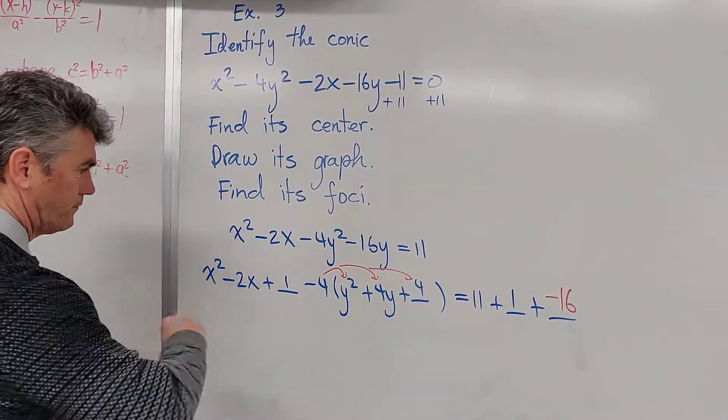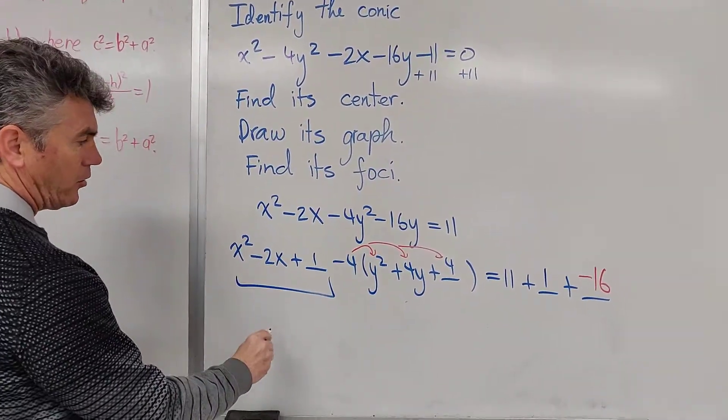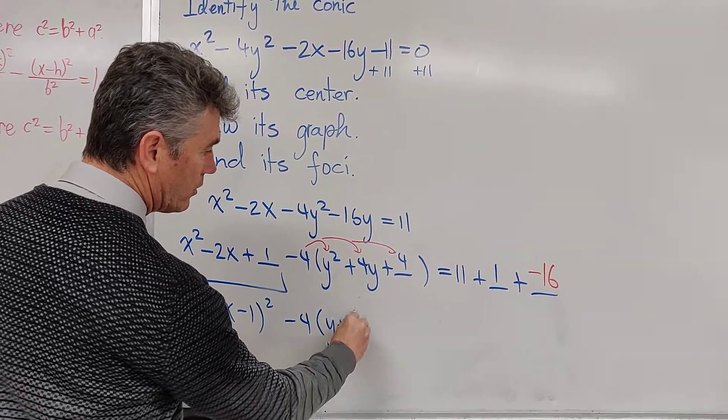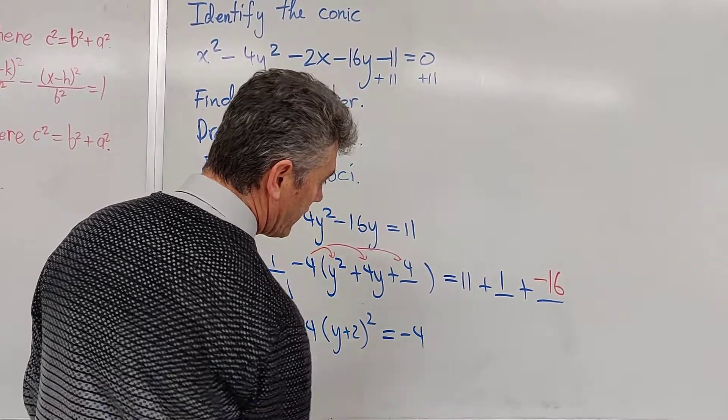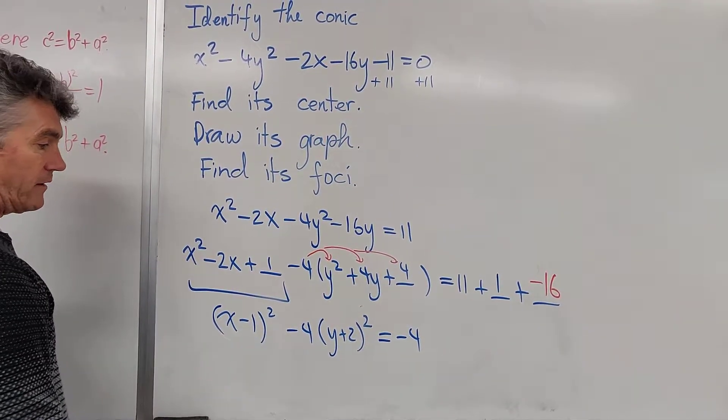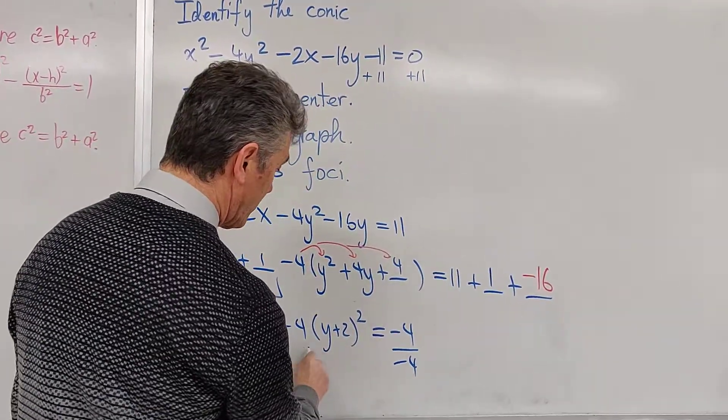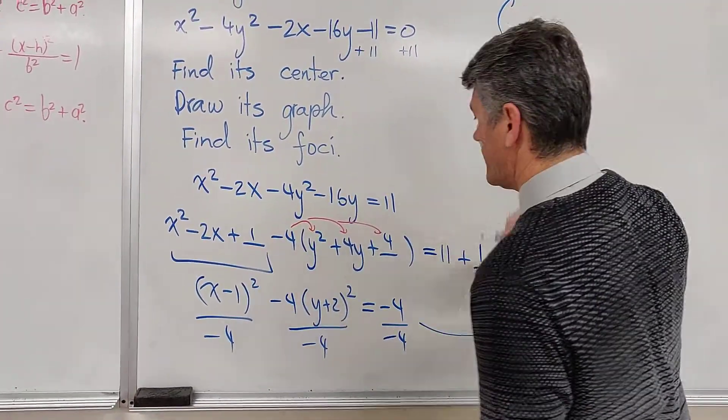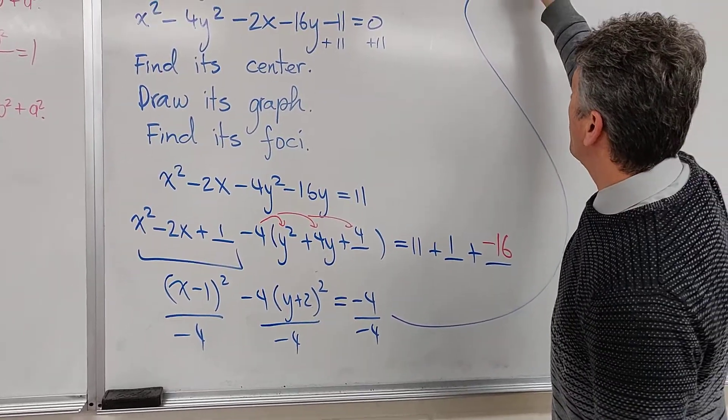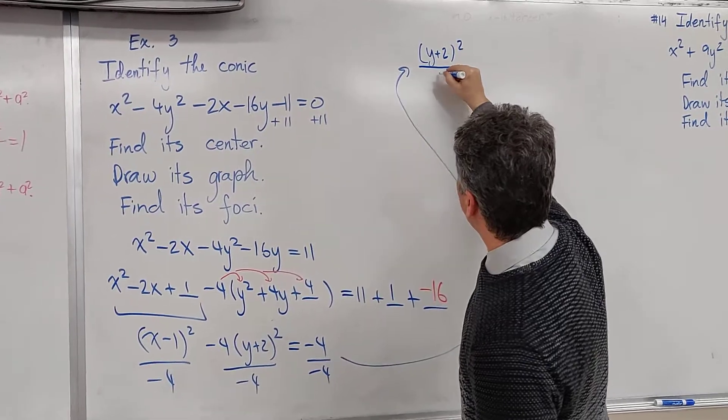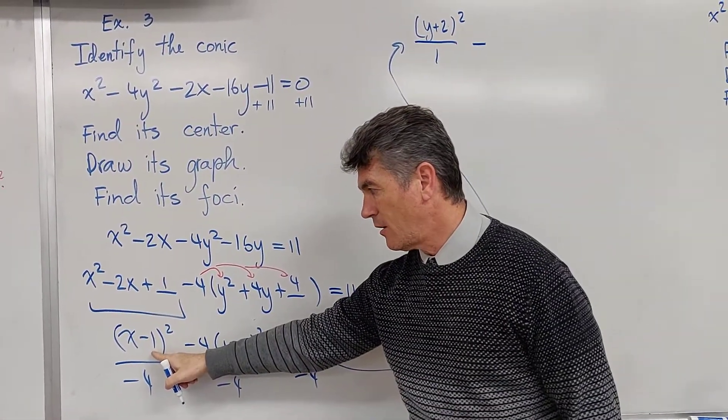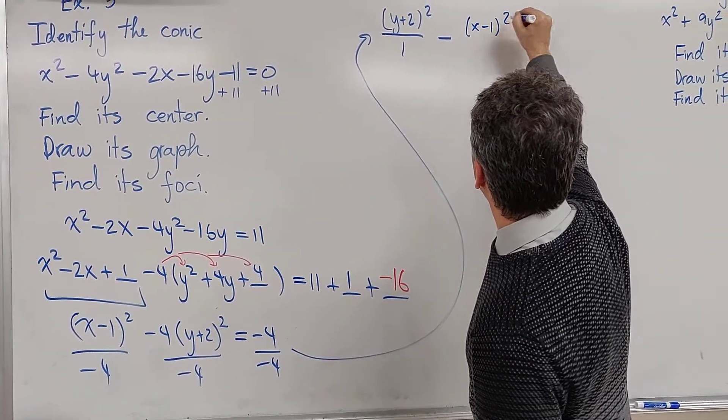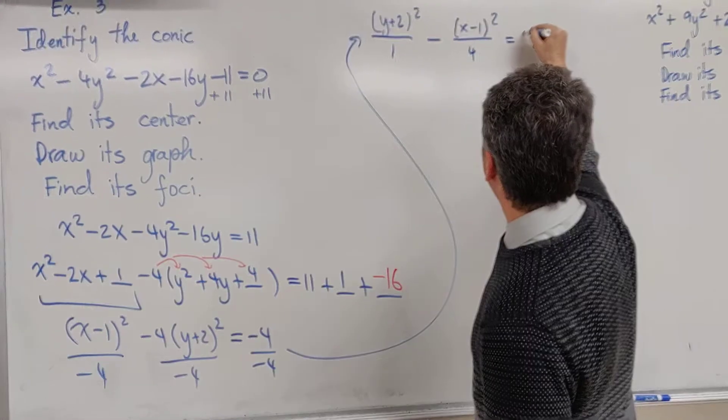Let's continue. Now we have perfect square trinomials. This is x minus 1, quantity squared, minus 4 times y plus 2, quantity squared, is equal to negative 4. Divide everything by negative 4. Our goal, remember, is to get 1 on one side. Let's see what our equation looks now like. We have y plus 2, quantity squared, over 1, minus x minus 1 squared, over 4, is equal to 1.